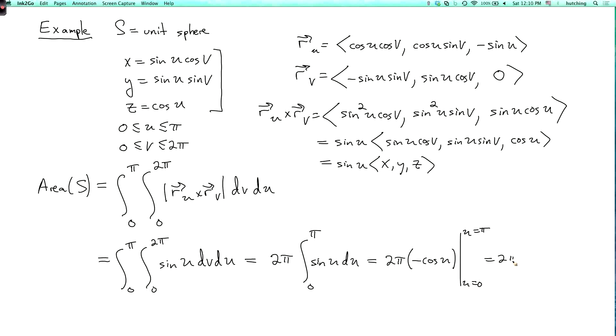So this is two pi times minus minus one minus minus one, which is four pi, which is what we're supposed to get. All right, one more example.